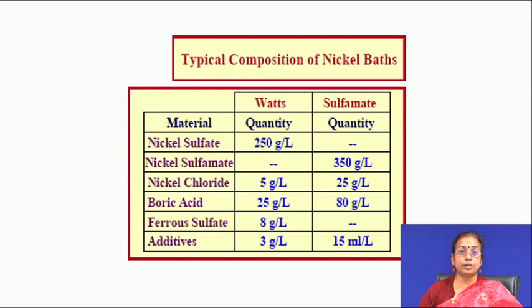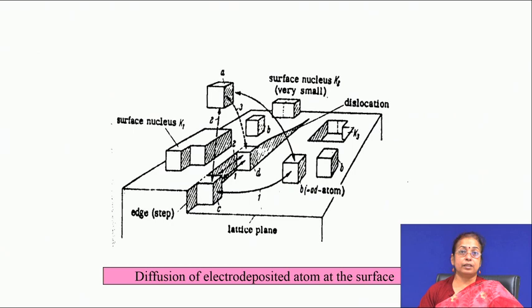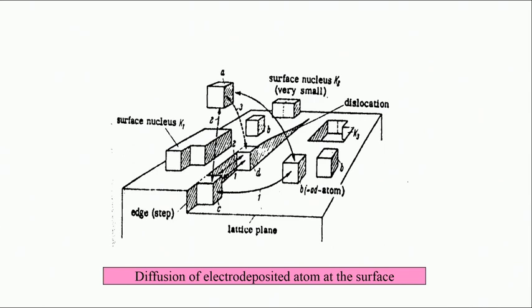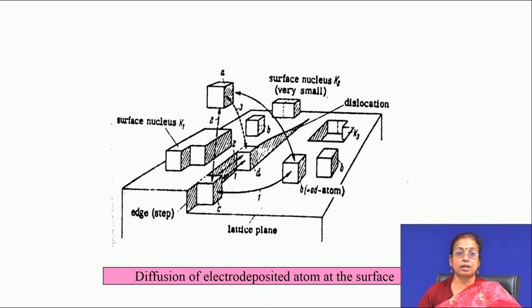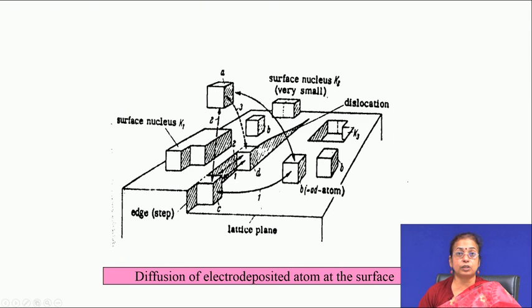For example, in nickel deposition the bath contains nickel sulphate solution and nickel chloride solution; boric acid is used as an additive to control brightness; ferrous sulphate is used as a buffer, and other additives can slow the reaction. The deposited layers are in the form of atoms, which can migrate on the surface due to surface defects, occupying defect sites and corners. This atomic-level diffusion at the interface provides adhesion and strength of the coating.